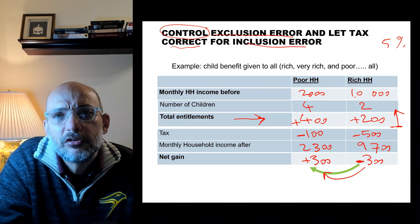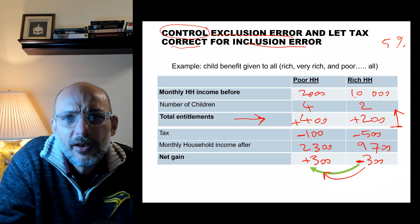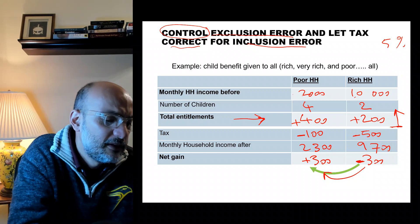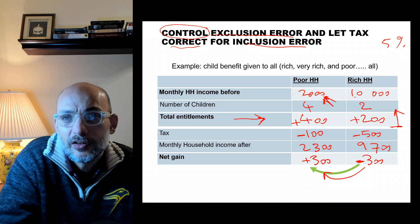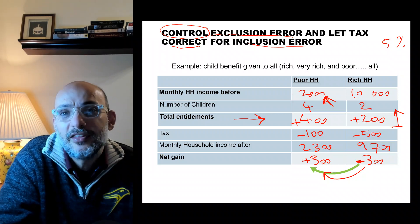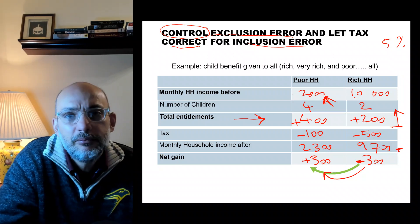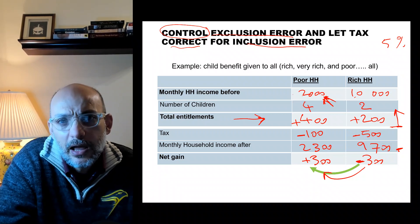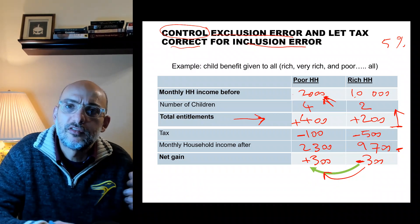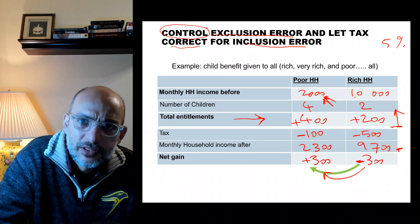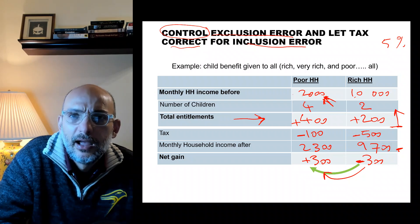There is also the multiplier effect. The rich household went from 10,000 to 9,700 — a three percent reduction — and they will not even notice it or change their consumption. But the poor household went from 2,000 to 2,300 — a 15 percent increase in income. That 15 percent means they will go buy things, creating a multiplier effect and stimulus in the economy.